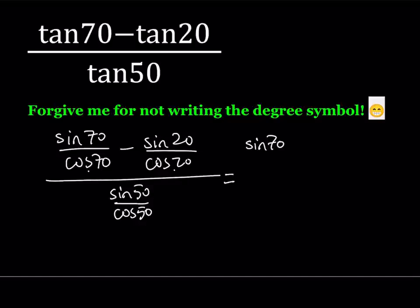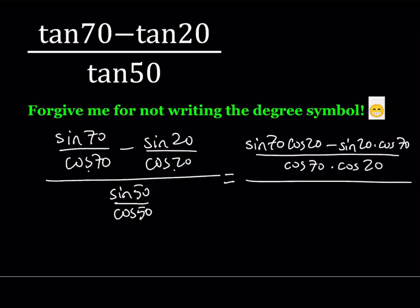So I get sine 70 times cosine 20 minus sine 20 times cosine 70, and that is divided by cosine 70 times cosine 20. And that is divided by this quantity. So at this point, I could just reverse and just multiply. But let's go ahead and take one more step here.